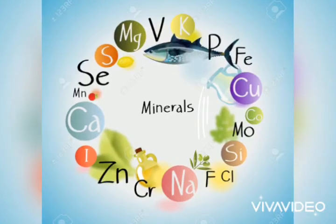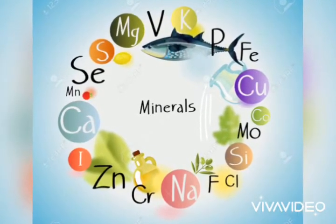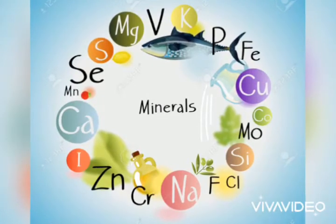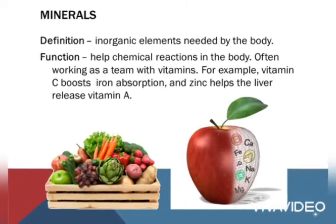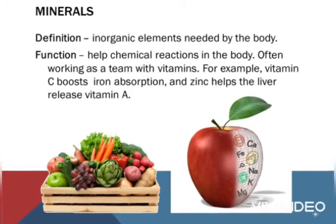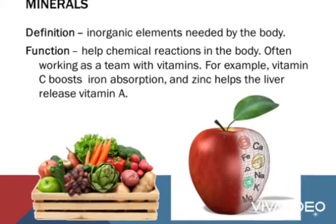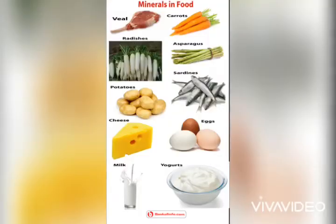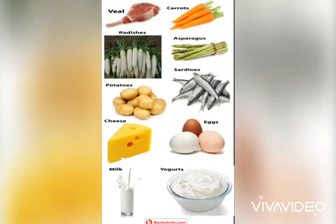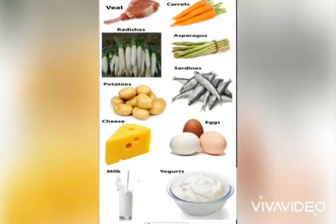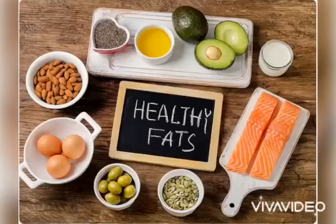The fifth nutrient is minerals. Minerals are inorganic elements needed by the body. Some examples include carrots, radishes, crackers, sardines, potatoes, cheese, yogurt, milk, and eggs.